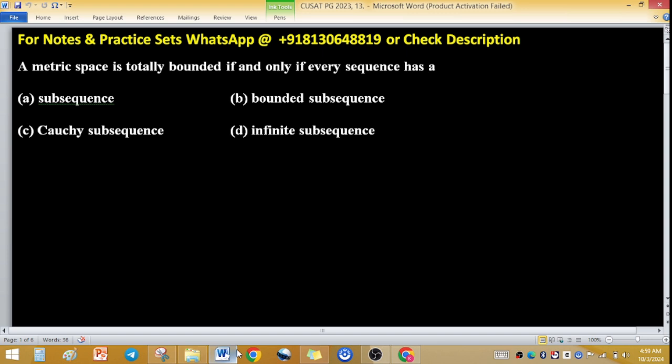On my screen, you will see that a metric space is totally bounded if and only if every sequence has a Cauchy subsequence. When we say a metric space is totally bounded, this is a theorem or a criteria. If we want to show it's totally bounded, then every sequence will be correct.